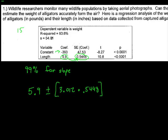So again, 5.9 minus 3.012 times 0.5448. And the smallest the slope could be with 99% confidence is 4.26. The highest the slope could be with 99% confidence is 7.54.